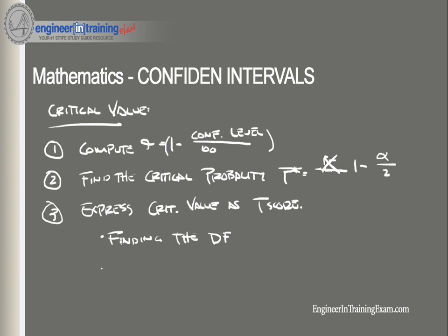We need T-star — the critical t-score — which is the t-score having degrees of freedom equal to df and a cumulative probability equal to the critical probability P-star. We go back to the t-distribution tables and use those tables to determine what the critical t-score is.